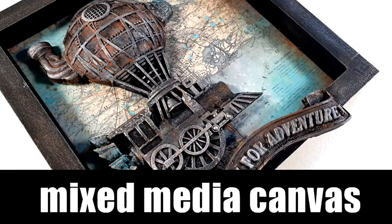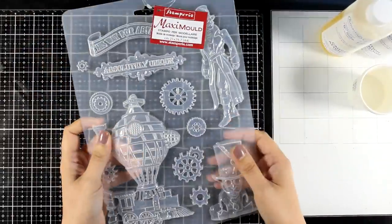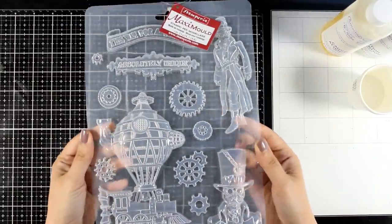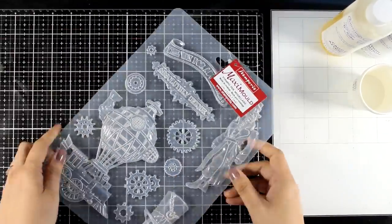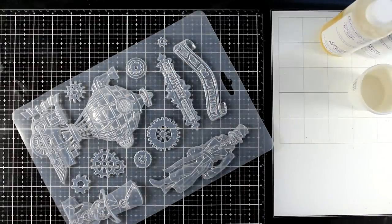Hi everyone and welcome back to another mixed media Tuesday. Today I'm going to play with my molds, my resin, and I'm going for a three-dimensional canvas. I'm going to play with this mold by Stamperia, designed by Antonis Tzenidakis from the Ser Vagabond collection. I'm going to play with the balloon and the train.